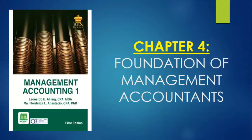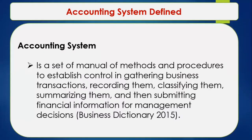What is meant by accounting system? An accounting system has been defined as a set of manual of methods and procedures to establish control in gathering business transactions, recording them, classifying them, summarizing them, and then submitting financial information for management decision. This is according to Business Dictionary 2015. In short, this set of manual of methods and procedures implies that financial information can be relied upon and can be verified.